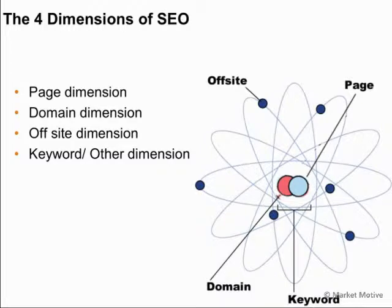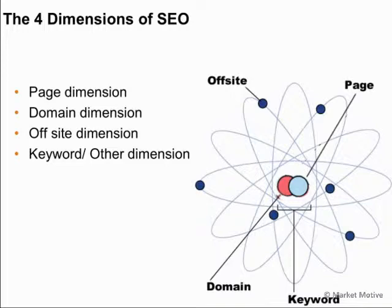So we're going to look at the different dimensions of SEO throughout the course of this presentation. I like to think of SEO as this nonlinear dimension. These are the four dimensions that I see: the page — the web page itself — the domain that that page is on, the off-site dimension being all the variables, signals, and factors that affect how that page ranks, and of course the keyword relevance or the other dimension — the other things that impact how your site ranks, things like site speed or site age. They all kind of fall within these dimensions, sometimes falling into multiple dimensions.